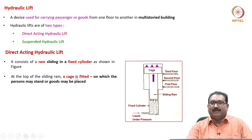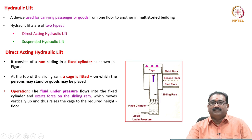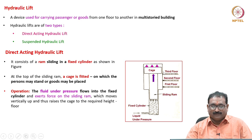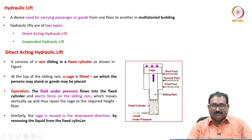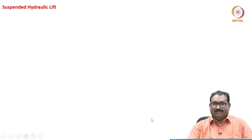At the top of the sliding ram, a cage is fitted on which persons may stand or goods may be placed. The operation is very simple: fluid under pressure flows into the fixed cylinder and exerts a force on the sliding ram, which moves vertically upward, raising the cage to the required height — first, second, or third floor. To lower the cage, the oil present in the sliding ram side is removed, and it will automatically move down. Due to the incompressibility of the fluid, there is cushioning for the sliding ram; valves are also used to control the downward motion.